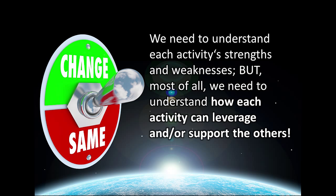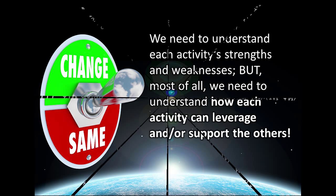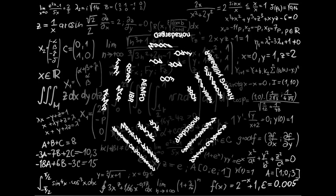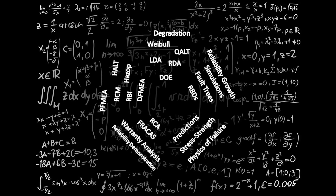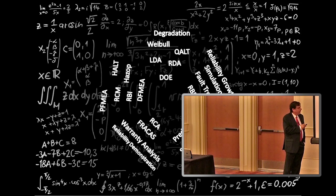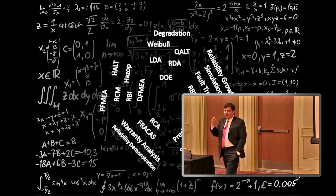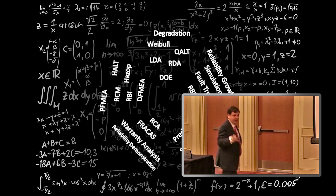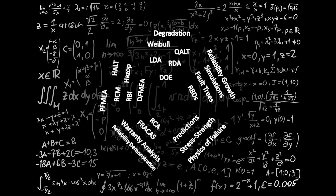There are many individual activities — generic activities. Most of the stuff we do today, from your Weibull analysis, life data analysis, prediction, stress-strain, physics of failures, your FRACAS, warranty analysis, root cause analysis, process FMEAs, RCMs, design FMEAs, RBDs, fault trees, reliability growth — all of those are activities. Some of us don't do every single one of them, but we do most of them. The problem is each one of those is done on its own without really looking at the others.